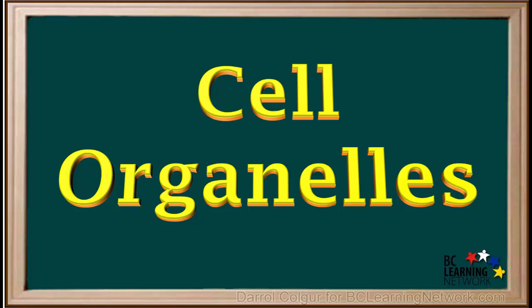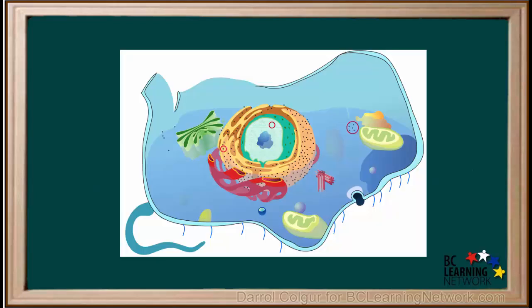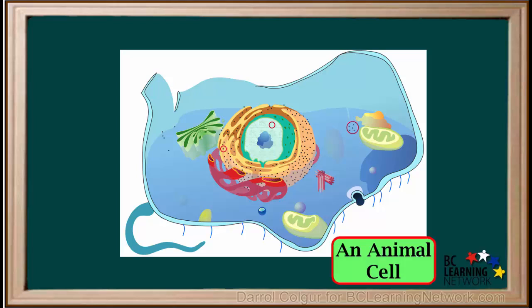Just like our bodies have different organs that perform certain functions for our body, cells have different parts that perform certain functions for the cell. These are called organelles. We will look at animal cells and plant cells. Many organelles are contained in both animal and plant cells, but some are present only in plant cells. We'll start by looking at animal cells.